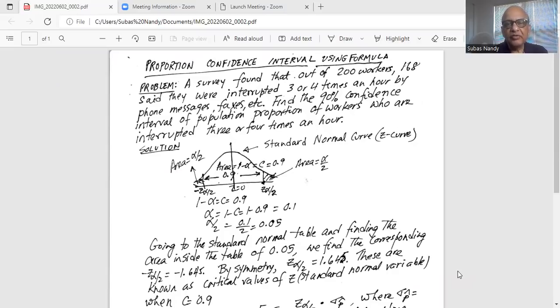The problem states a survey found that out of 200 workers, 168 said they were interrupted three or four times an hour by phone messages, faxes, et cetera. Find the 90% confidence interval of the population proportion of workers who are interrupted three or four times an hour.